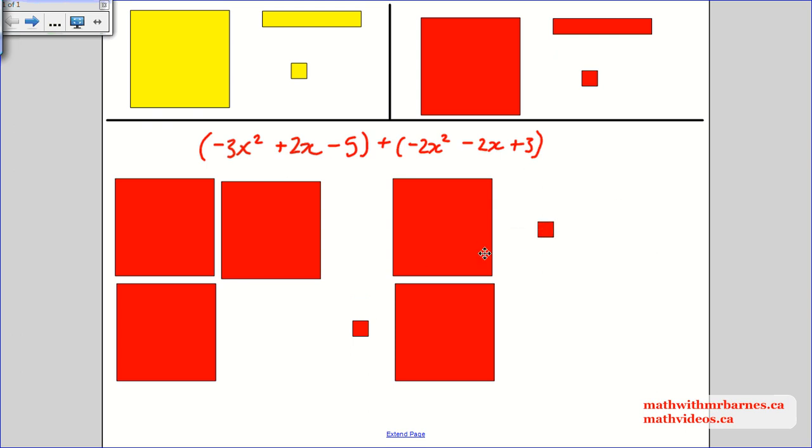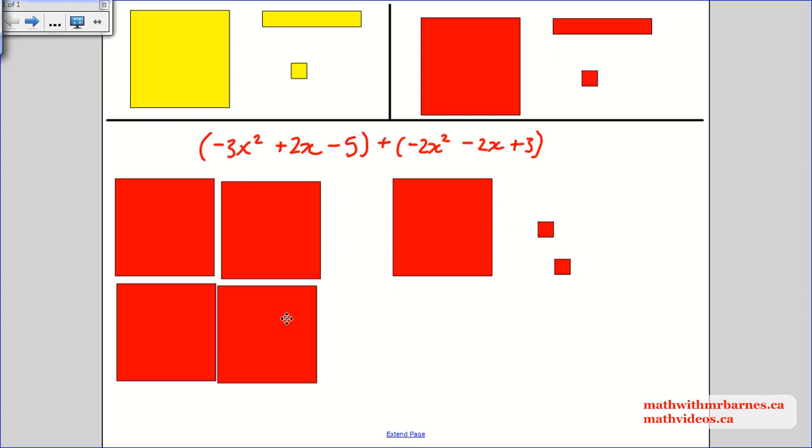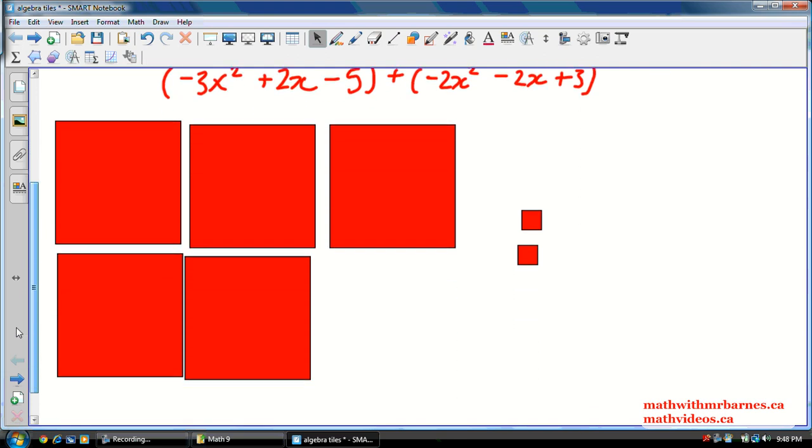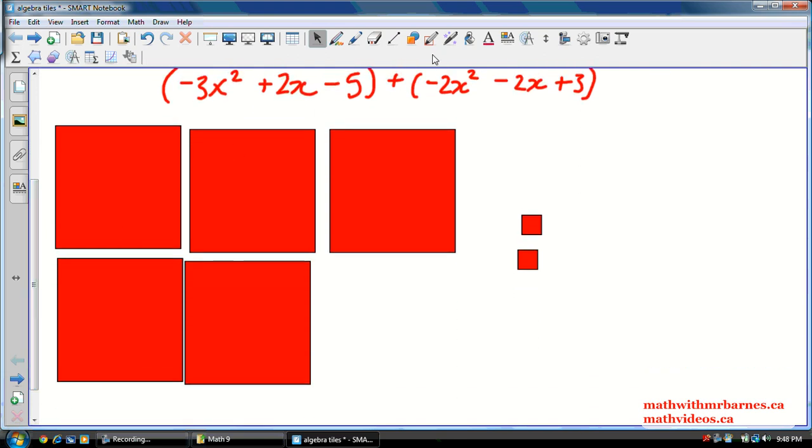So now what we do, we combine our like terms. I'll move all my x tiles, which is entirely possible to happen. They cancel out to be zero. So what I'm left with is negative 5x squared, 5x squared minus 2. So in that case, when there's no x tiles left, there's no need to write zero x. Just leave it out completely. Move on.